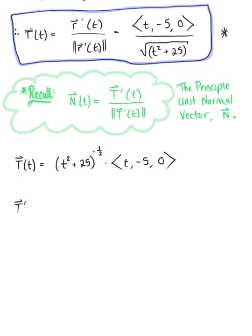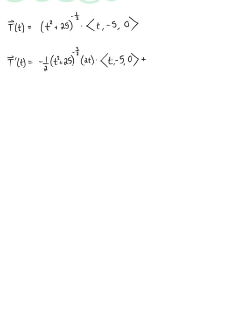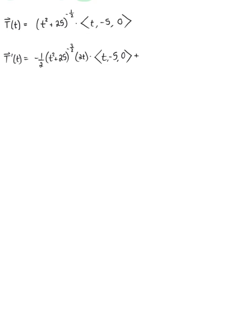Applying the product rule to differentiate, the first term is −1/2 · (t² + 25)^(−3/2) · 2t, multiplied by the vector (t, -5, 0). The second term is plus the original real-valued function (t² + 25)^(−1/2), multiplied by the derivative of the vector, which gives us (1, 0, 0).